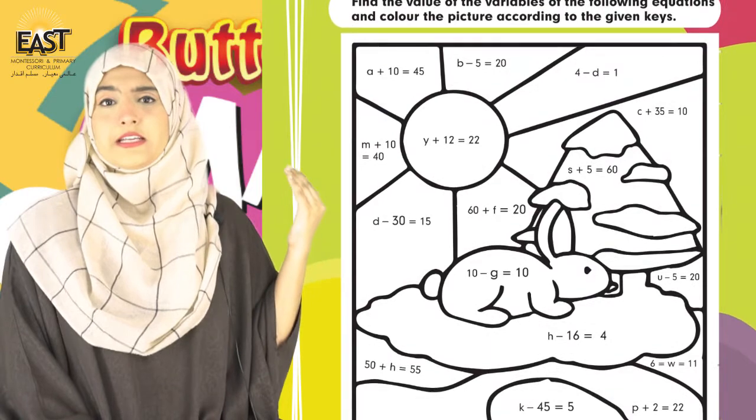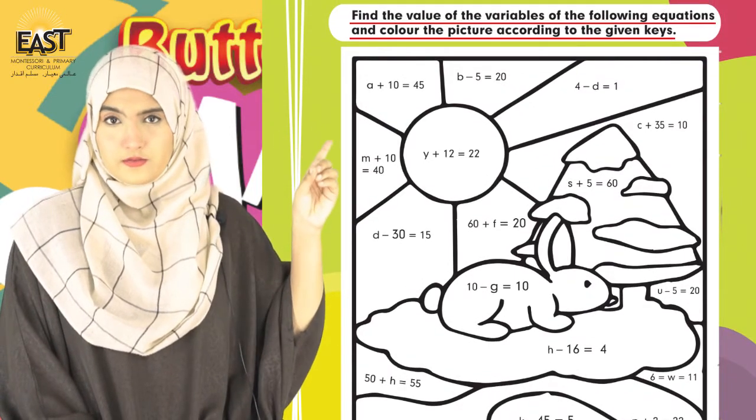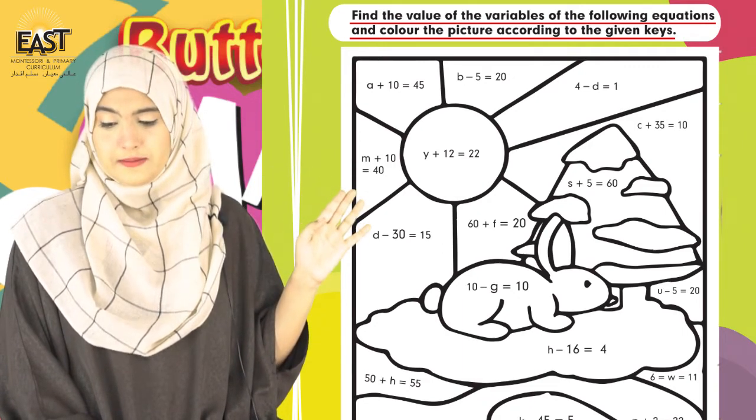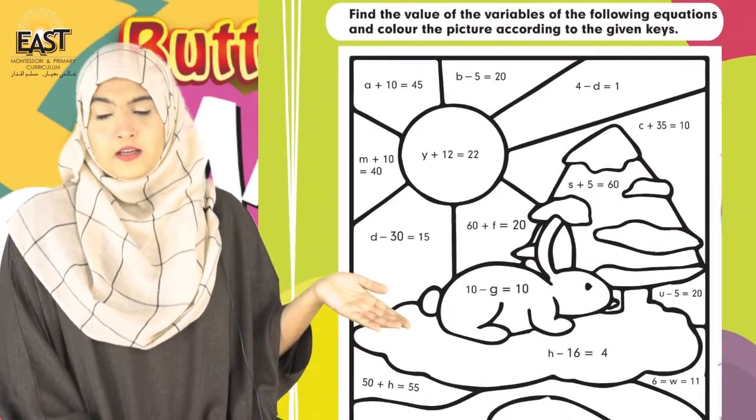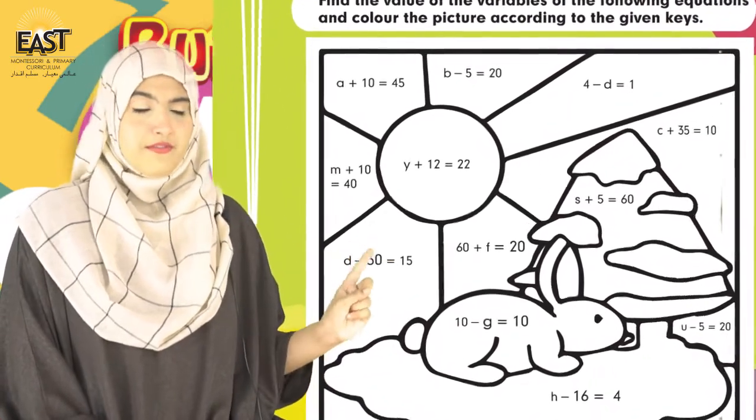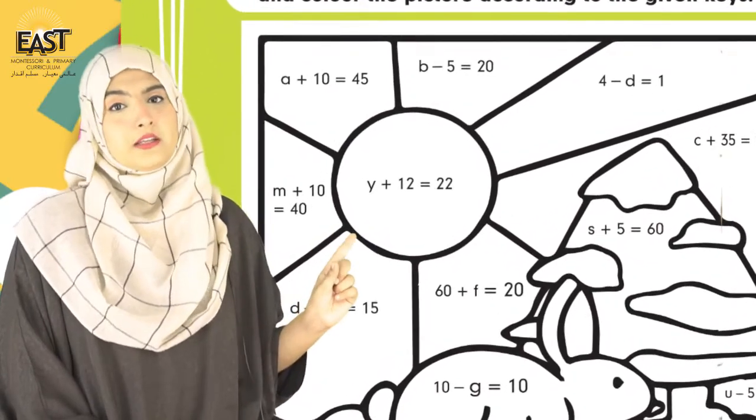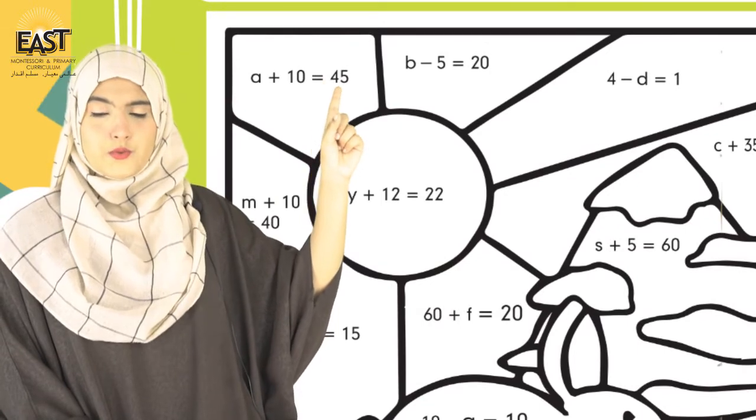Jiasse ki aap sawal me oopper read kar sakti hai, ke pahle to aapne values find karnei hai - find the values. Variable ki values find karne ke baad, aapne yehahaan joh dihii hoi hai colors, is puri box me aapne find karnei hai ke woh particular value kaun se color ke saamne likhi hoi hai.